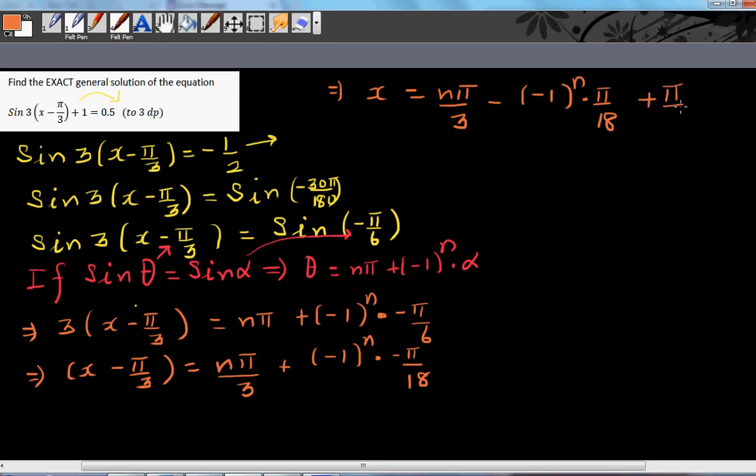So this is the general and exact solution. This is the general and exact solution of this equation. n pi by 3, this plus and this minus makes this minus and this is pi by 18 plus pi by 3 by adding pi by 3 to both sides.